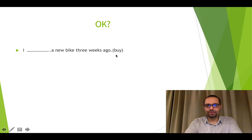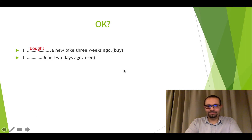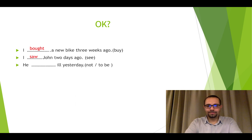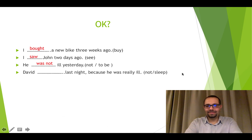Are you ready for a short quiz? Let's go. Buy — past form 'bought': I bought a new bag three weeks ago. See — past form 'saw': I saw John two days ago. To be — negative form: He wasn't ill yesterday.